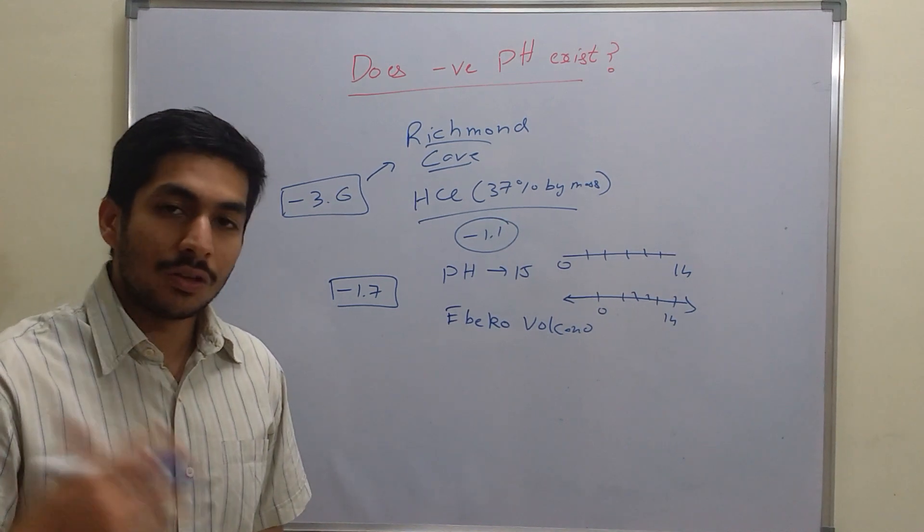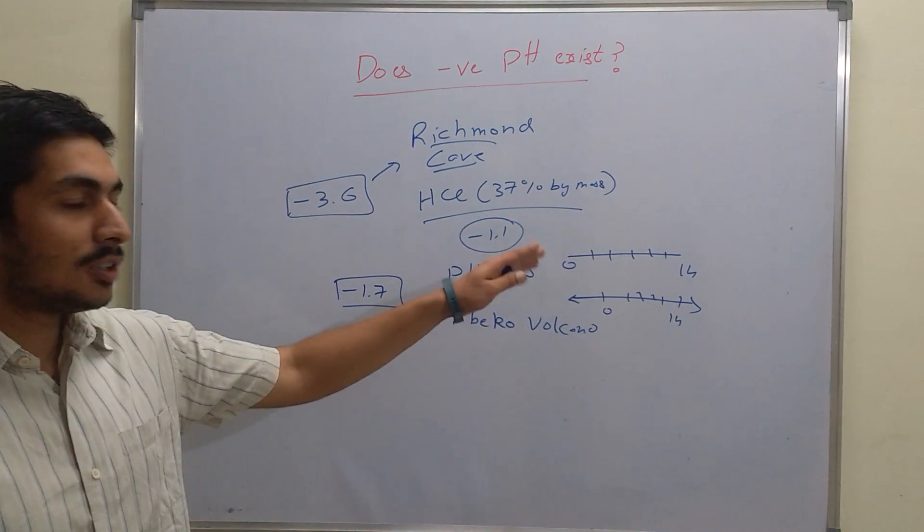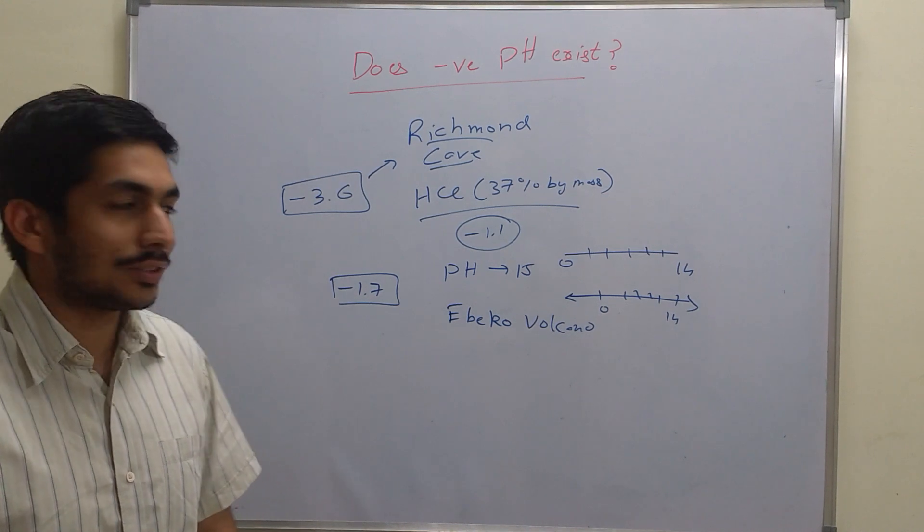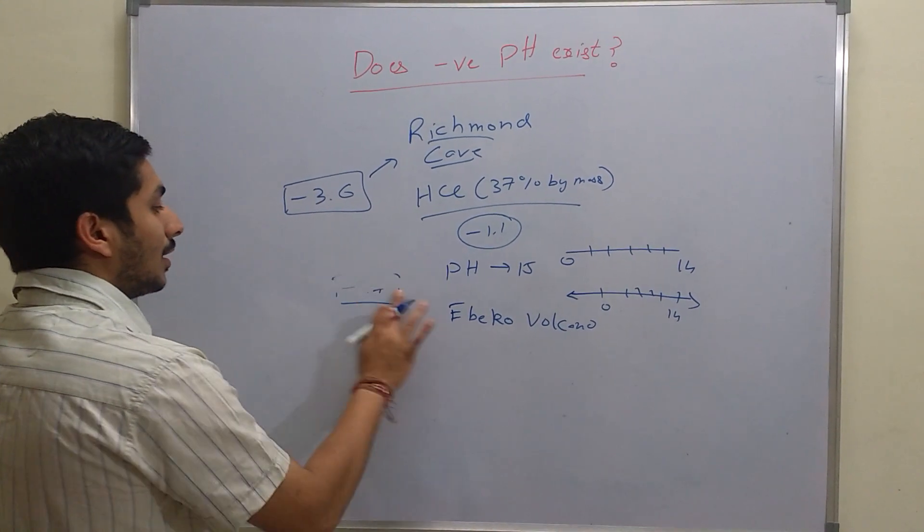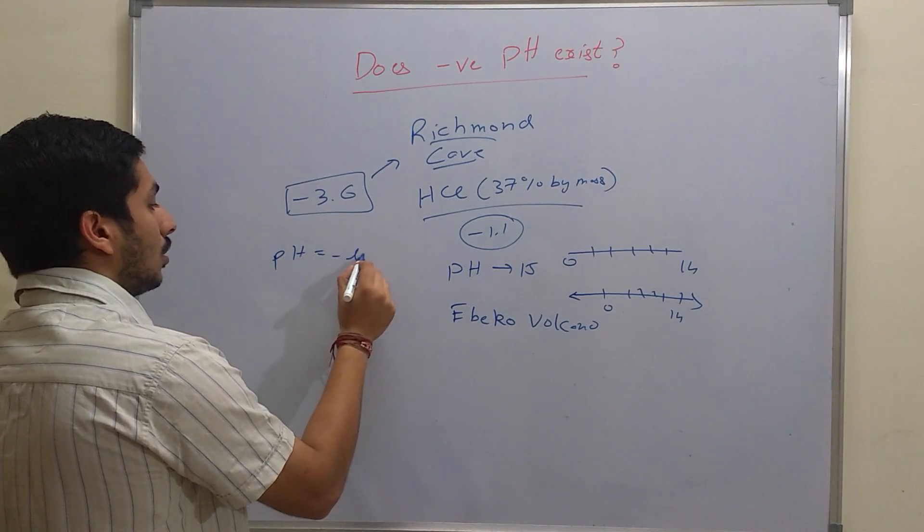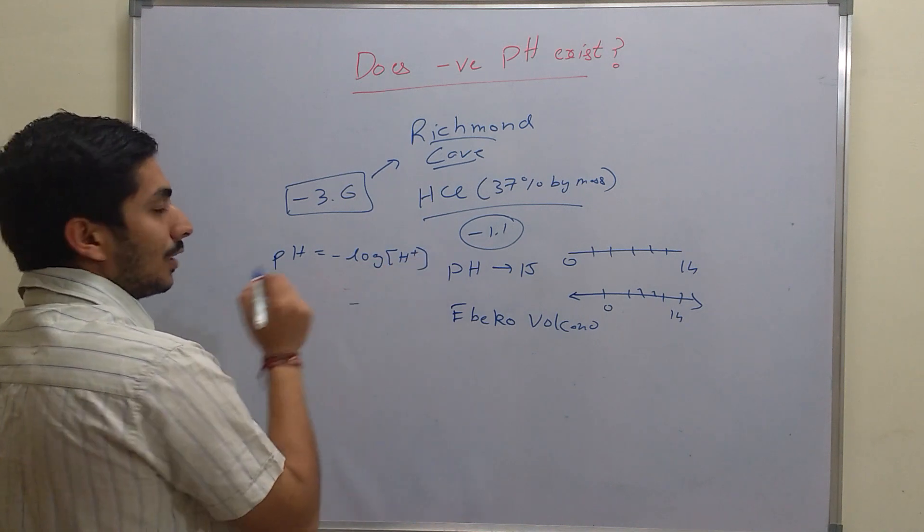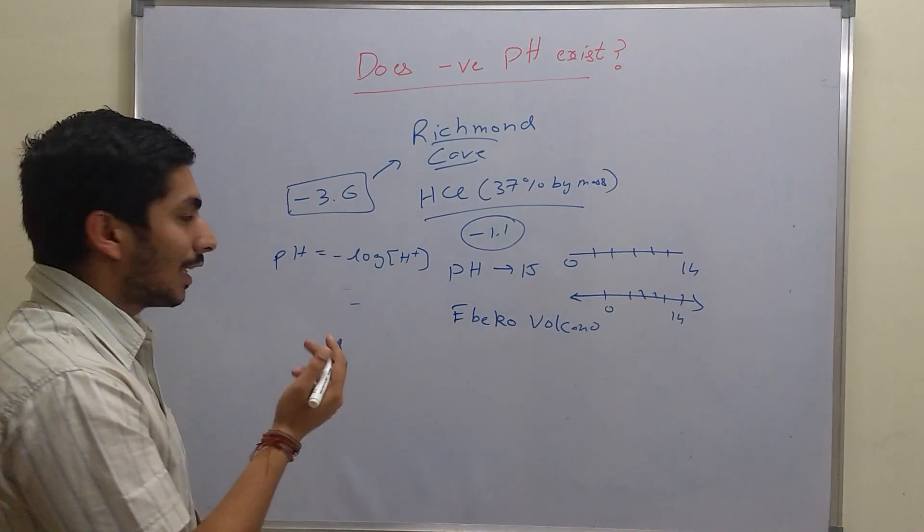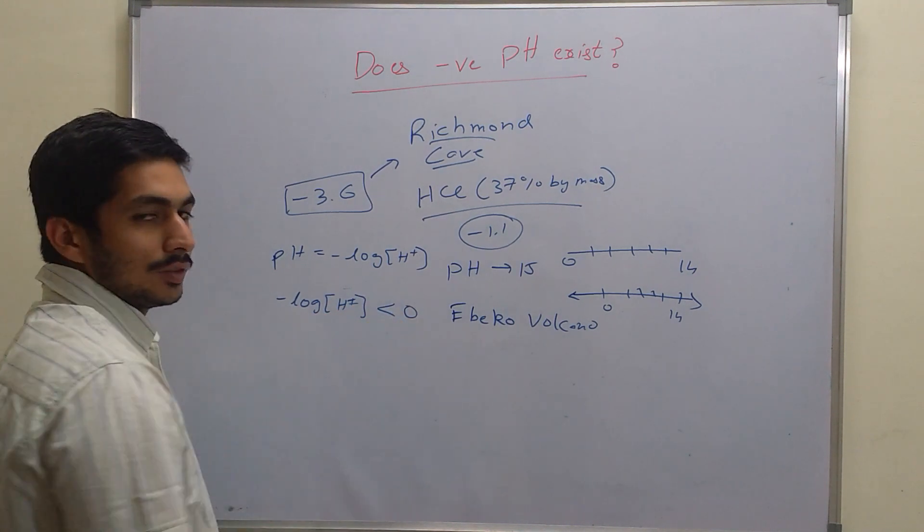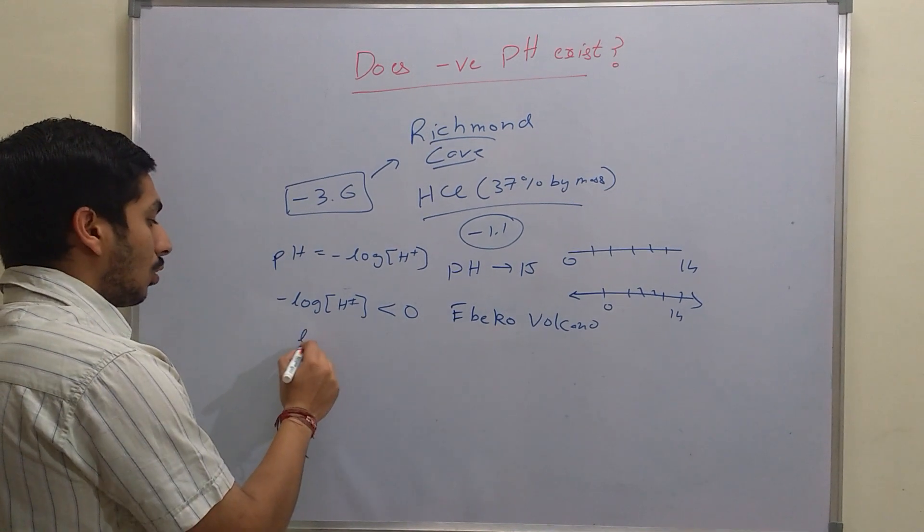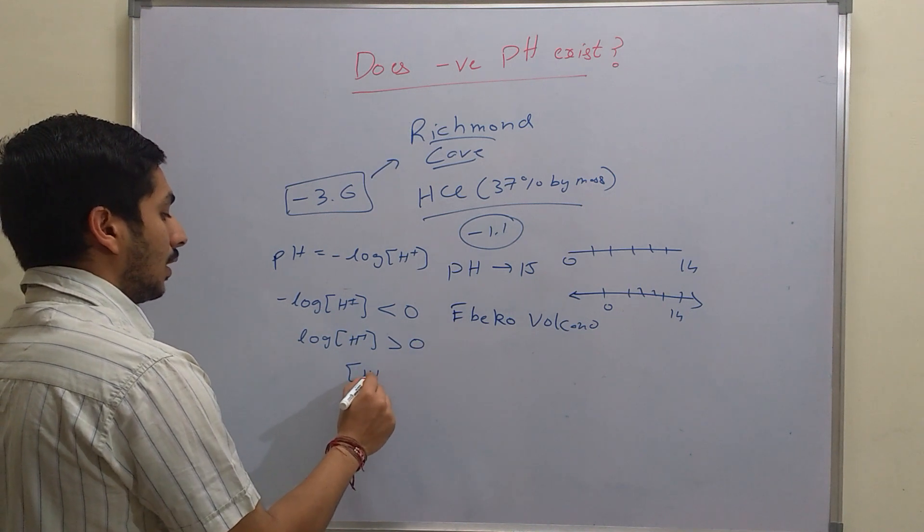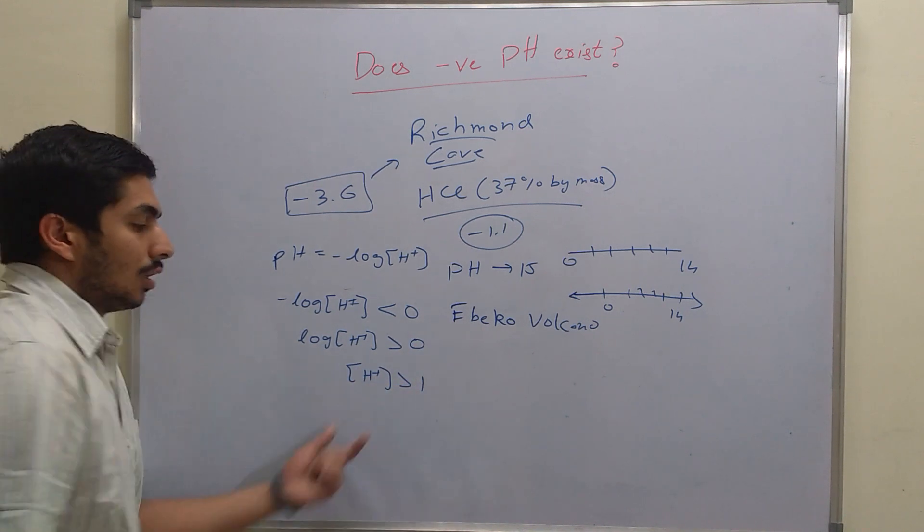Theoretically speaking, yes, a negative pH can exist. How? See, your pH is basically nothing but minus of log H plus. So if you want the pH to be less than 0, that is negative, then minus of log H plus should be less than 0. That means log of H plus has to be greater than 0, or H plus should be greater than 1.